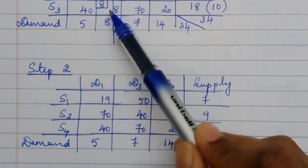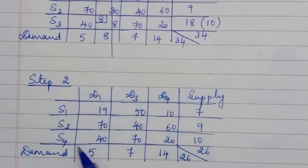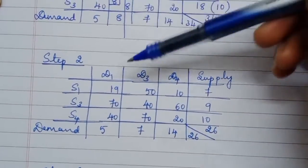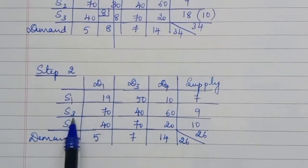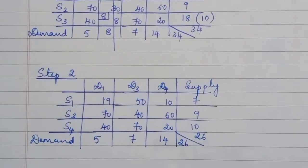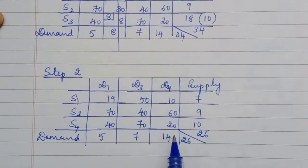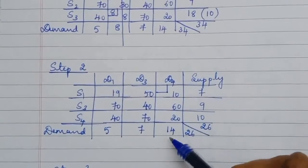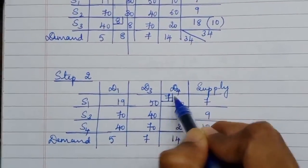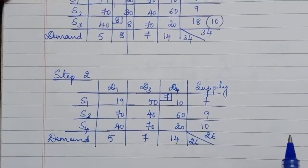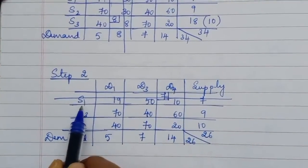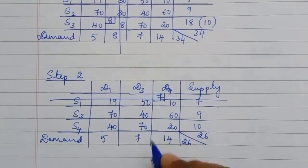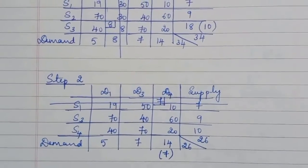In step 2, we rewrite the problem with remaining rows and columns. Since D2's demand was satisfied, that column is removed. We now have 3 sources and 3 destinations. From the remaining cost matrix, we find the next least cost cell and allocate. Supply from S1 is exhausted and given to D4. D4 demanded 14 but only 7 are supplied, leaving 7 more products still needed.